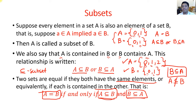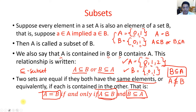Therefore, these two sets are not equal, because we must meet both conditions: A ⊆ B and B ⊆ A. As additional information, any set is a subset of itself.